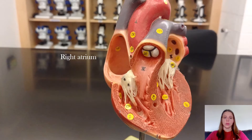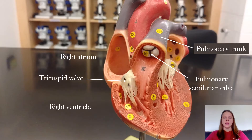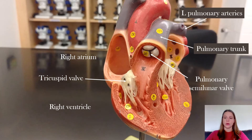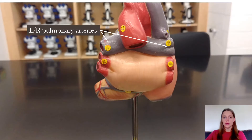Once the blood gets into the right atrium, it passes through the tricuspid valve into the right ventricle. The right ventricle then pumps the blood up through the pulmonary semilunar valve into the pulmonary trunk, where it then goes into the pulmonary arteries. On the back we can see the left and right pulmonary arteries, which take the blood out to the lungs to receive oxygen and drop off carbon dioxide.